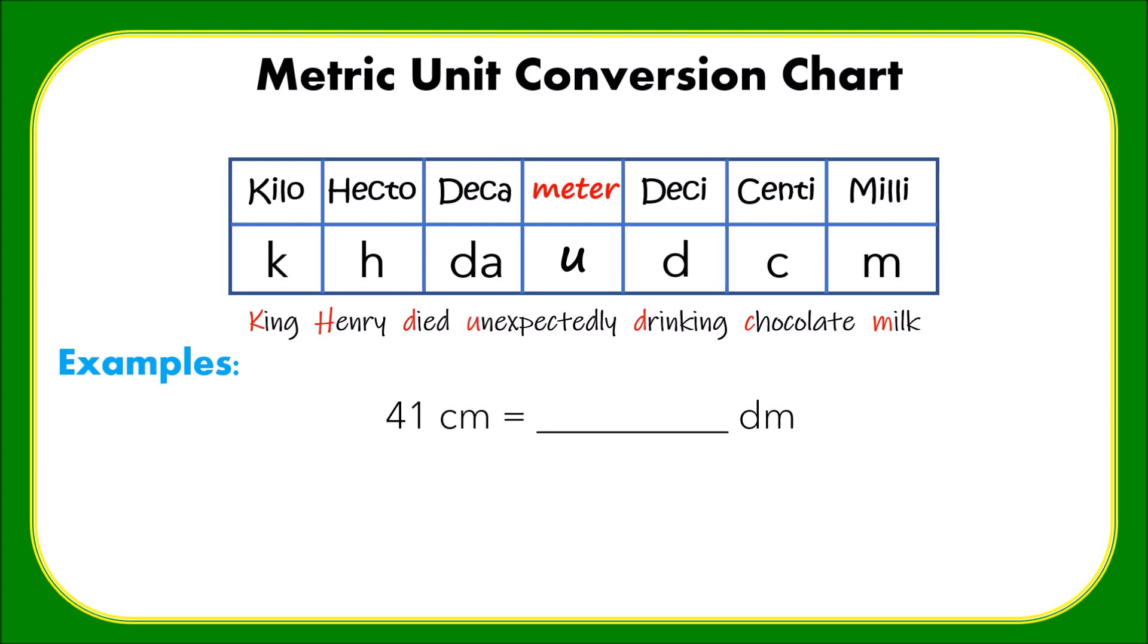For the last example, convert 41 centimeters to decimeters. We already know that the decimal point of a whole number is always on the right. So from centimeter to decimeter, how many places will the decimal point move? Correct, it moves one place to the left. Therefore, we can say that there are 4.1 decimeters in 41 centimeters.